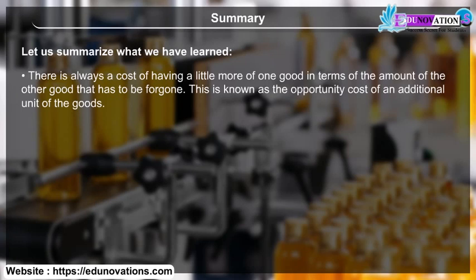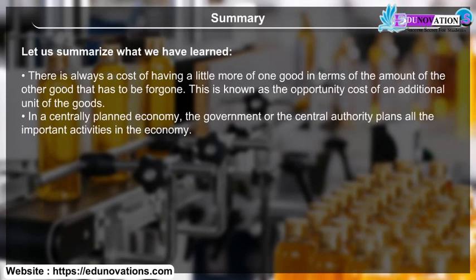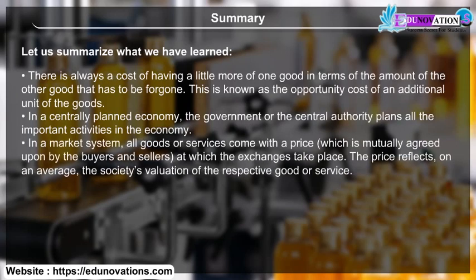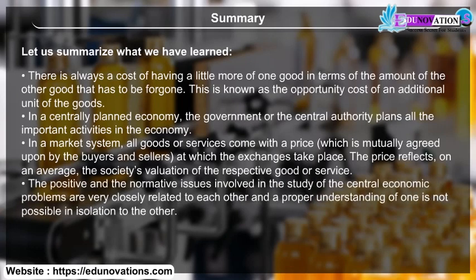In a centrally planned economy, the government or central authority plans all the important activities in the economy. In a market system, all goods or services come with a price mutually agreed upon by buyers and sellers at which exchanges take place. The price reflects, on average, society's valuation of the respective good or service. The positive and normative issues involved in the study of central economic problems are very closely related, and a proper understanding of one is not possible in isolation from the other.